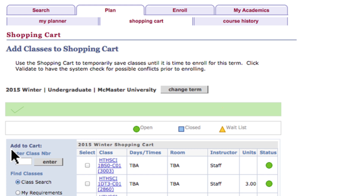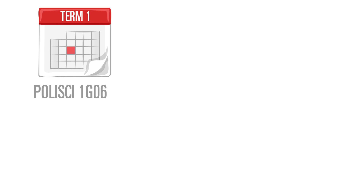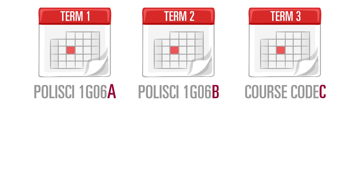Repeat the search process until you've added all of your desired classes for a particular term. During the enrollment process, note that multi-term courses — for example, Political Science 1G06 — are denoted with an A, B, or C after the course number in Mosaic. A represents the first half of Political Science 1G06, B the second half, and for courses lasting 12 months, C might be used to describe the third term.